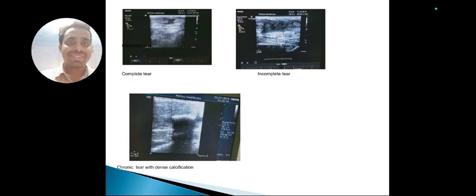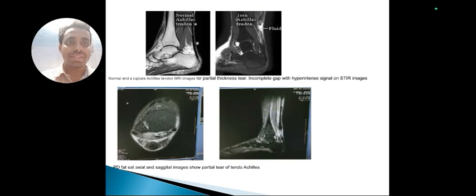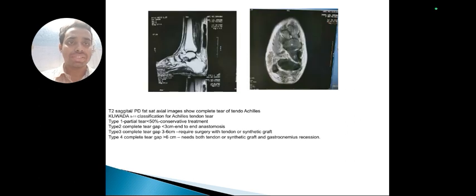These images show complete tear, incomplete tear, and chronic tears with dense calcification. Various MR images detect tendo-Achilles torn. The second image shows partial tear, and this is a complete torn tendo-Achilles. We use a quarter classification for tendo-Achilles tear: Type 1 to 4, with partial tear, complete tear with gap less than 3 cm, 3 to 6 cm as Type 3, and complete tear gap greater than 6 cm.